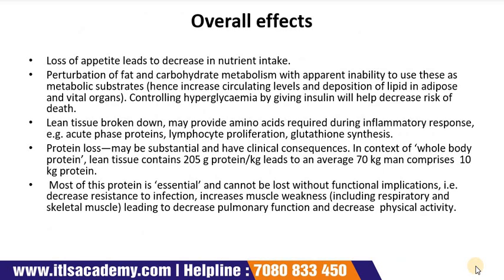The overall effects comprise loss of appetite leading to decreased nutritional intake, perturbation of fat and carbohydrate metabolism with apparent inability to use these as metabolic substrates, and hence increased circulating levels and deposition of lipids in adipose and vital organs. Controlling hypoglycemia by giving insulin helps decrease the risk of death. Lean tissue broken down may provide amino acids required during inflammatory response — for example, acute phase proteins, lymphocyte proliferation, and glutathione synthesis.